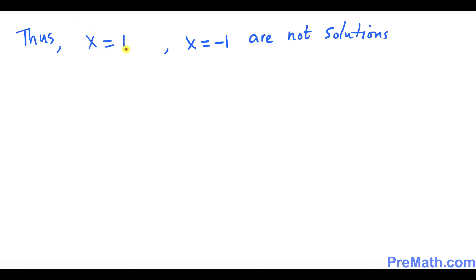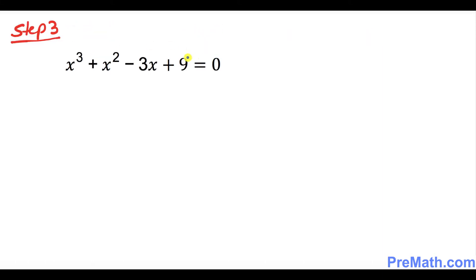So x = 1 and x = -1 are not solutions. Now look at the last number, which is 9. The possible divisors of 9 are ±1, ±3, and ±9. Since we already ruled out ±1, we are now pinning our hope on ±3 and ±9.